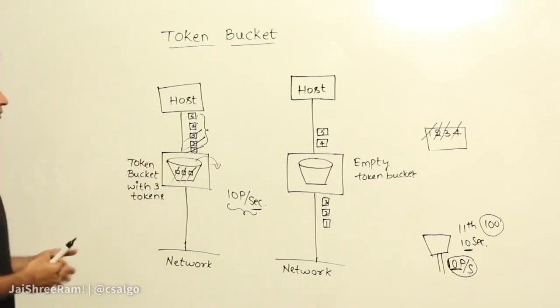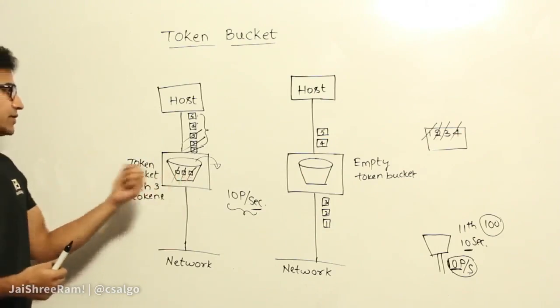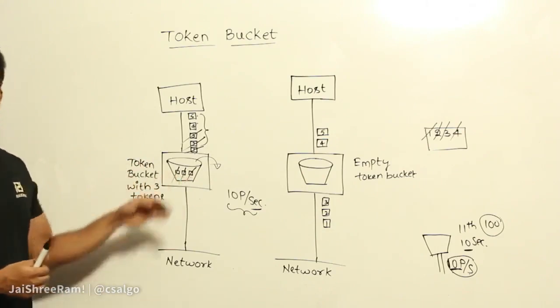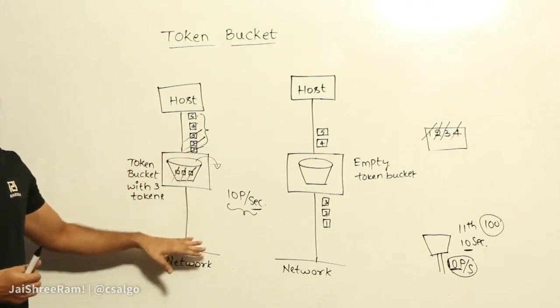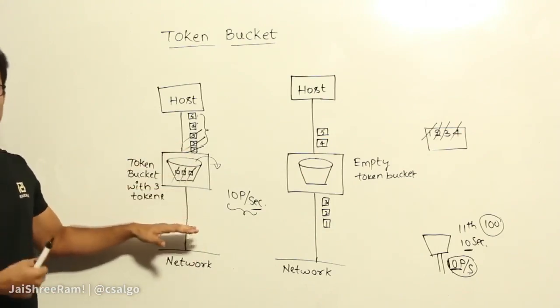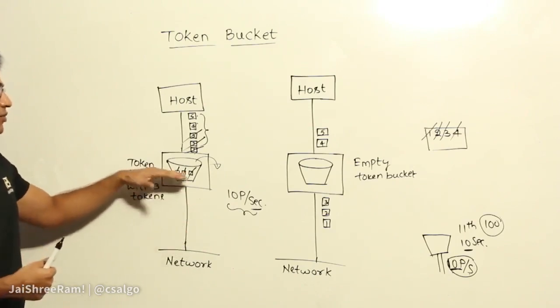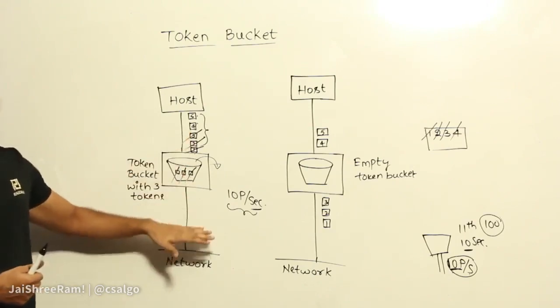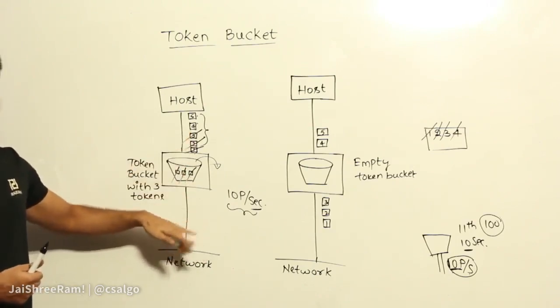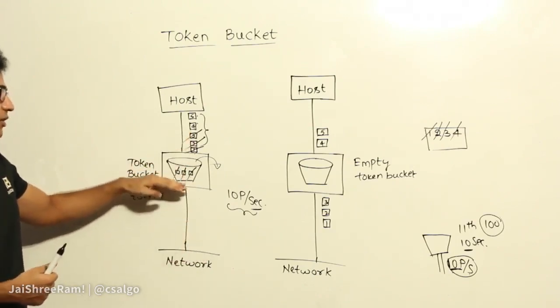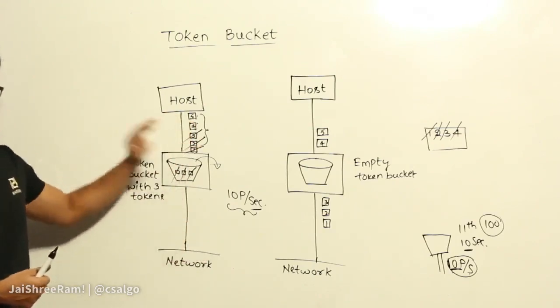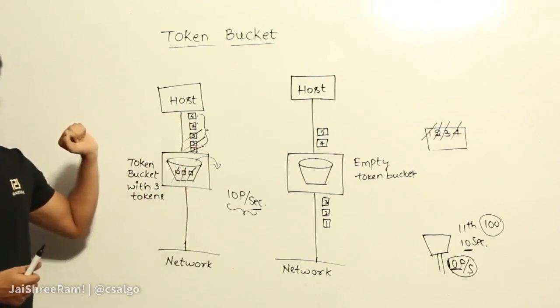For example, if you have 10 tokens in the bucket, you can send 10 packets. If you have 100 tokens, you can send 100 packets. If you have 0 tokens, all packets have to wait.